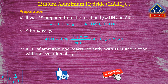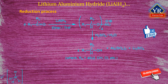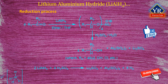It is spontaneously inflammable and reacts violently with water and alcohol with the evolution of hydrogen. It is soluble in ether, tetrahydrofuran, and dioxane. The reduction process is carried out by taking powdered lithium aluminium hydride added to dry ether or tetrahydrofuran, kept agitated in a flask fitted with a condenser and a dropping funnel. Solution of the substance in ether is then gradually run into the flask so as to maintain a gentle boiling of the mixture. The reduction product is decomposed with water and acid, and excess lithium aluminium hydride is also decomposed by water and acid.